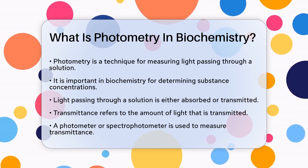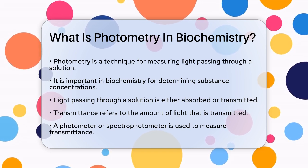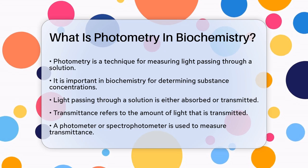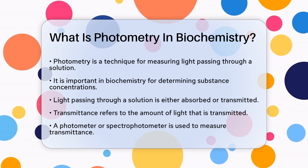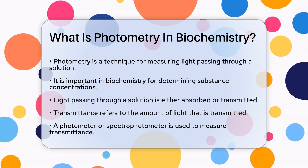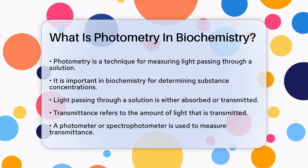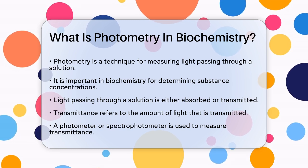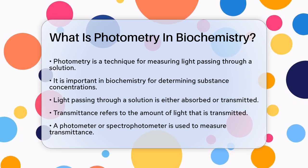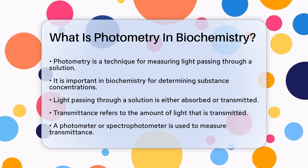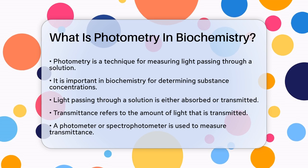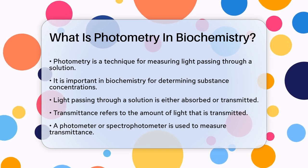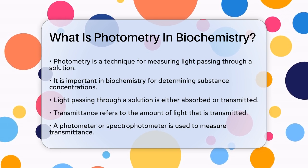Here's how it works. When light passes through a solution, some of it is absorbed by the substances in the solution, and the rest is transmitted. The amount of light that is transmitted is called transmittance. This is measured using a device called a photometer or spectrophotometer.